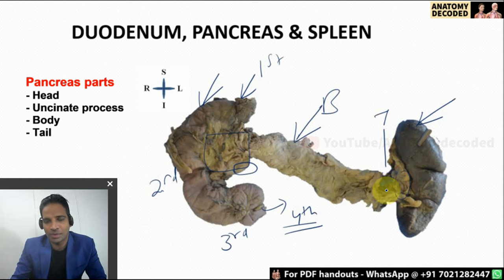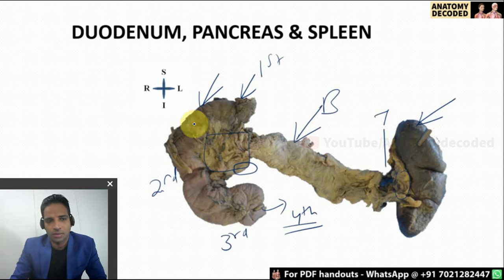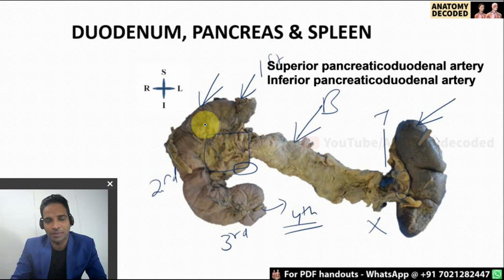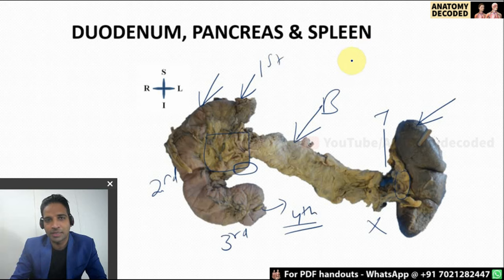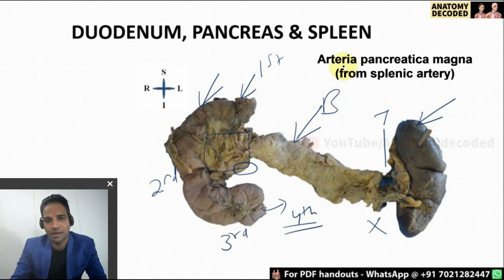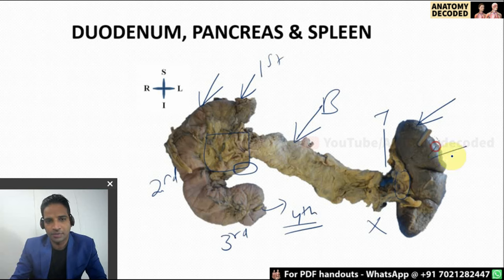This region of the spleen is referred to as the hilum, so the tail of the pancreas is related with the hilum of the spleen. When the specimen of pancreas is given it is kept along with the duodenum — that is how you can easily identify it. Little details about the arterial supply: the superior pancreaticoduodenal artery and inferior pancreaticoduodenal artery supply the duodenum, and for the pancreas the major branch is arteria pancreatica magna, which is a branch from the splenic artery — a direct branch from the celiac trunk.